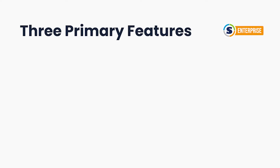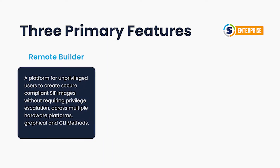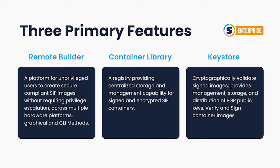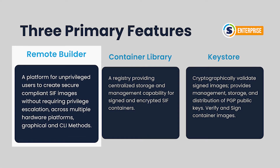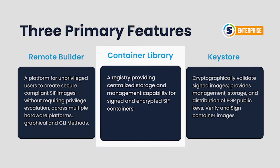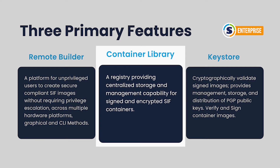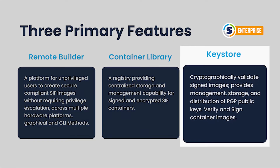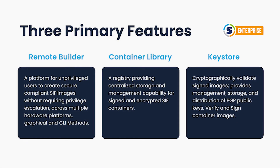Scilabs Singularity Enterprise consists of three primary functions to augment container workflows: Remote Builder, Library, and a Keystore. The Remote Build service allows users to easily and securely create application containers without special privileges or a local setup. The Library is a place for users to share SIF images as well as push or pull those images through Singularity CLI. And finally, the Keystore gives users the ability to create, manage, and use PGP keys to sign and verify containers.